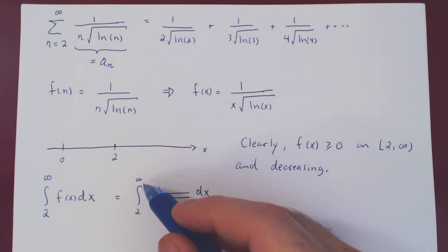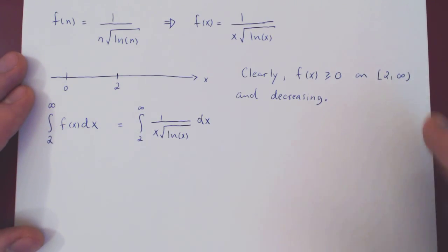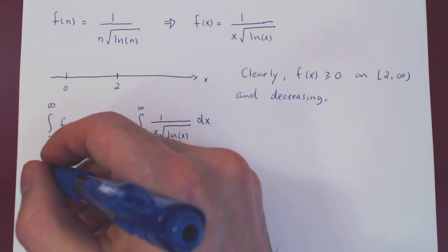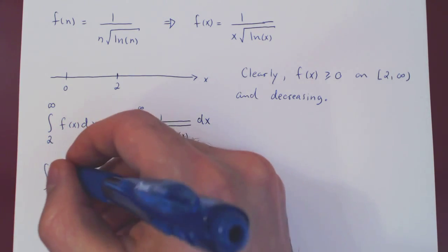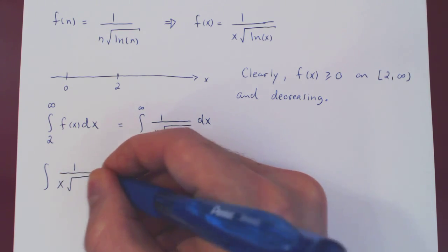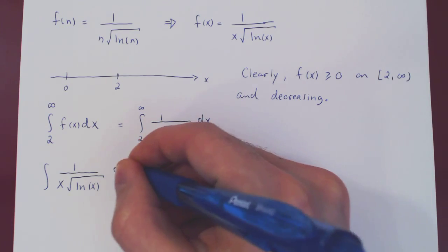Now, we simply have to try and figure out whether this improper integral converges or diverges. Well, let's first find our antiderivative, and then we'll see what happens. So we're trying to integrate 1 over x the root of ln of x dx.